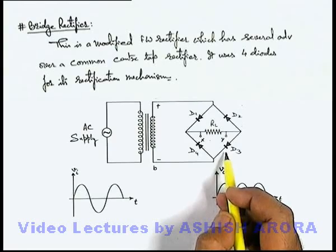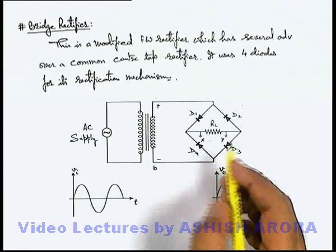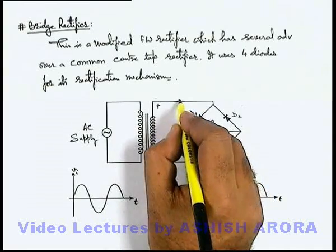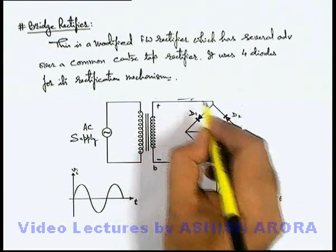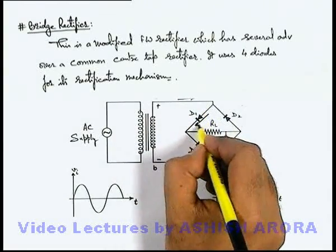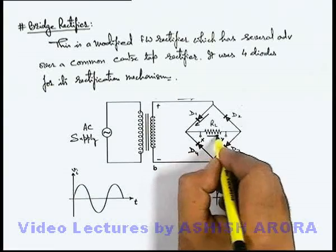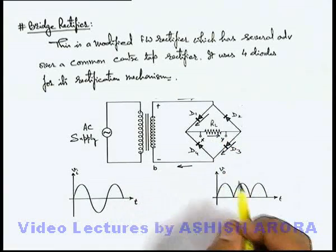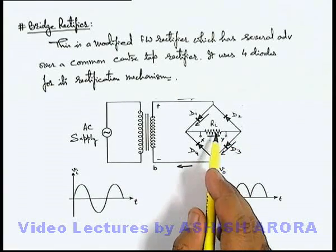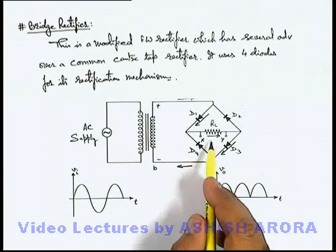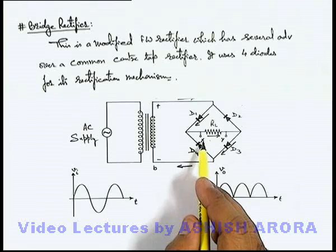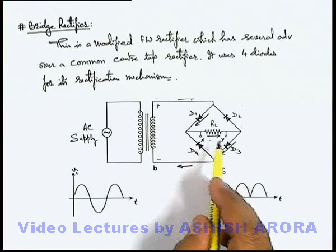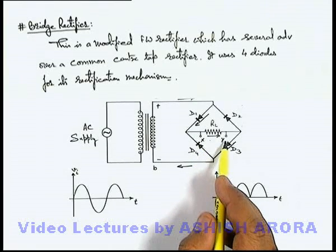So in this situation the current is passing through D1 and D3, as shown by the arrows. Finally, from the load resistance we can say current is flowing from terminal X to terminal Y.